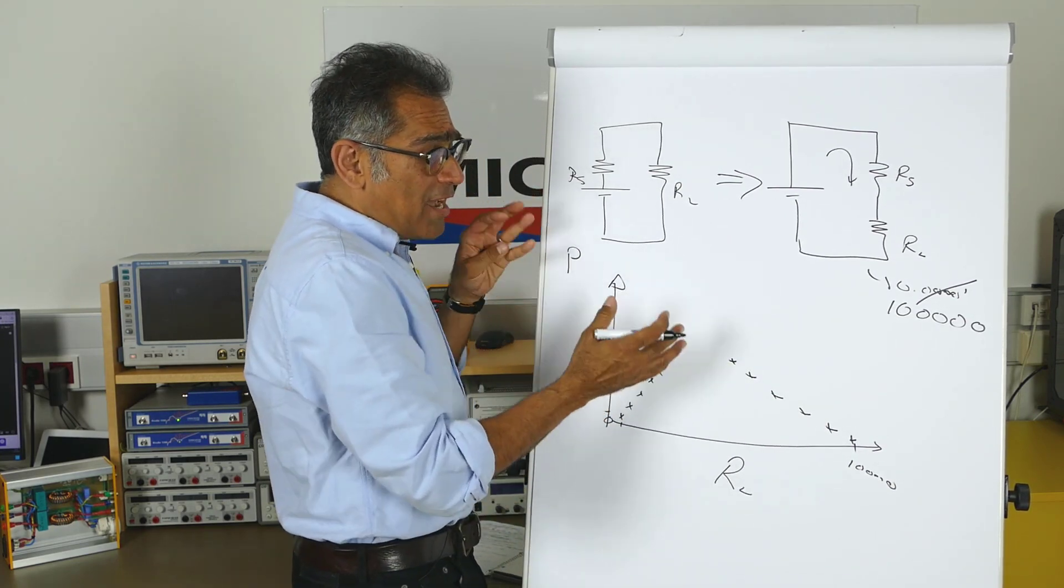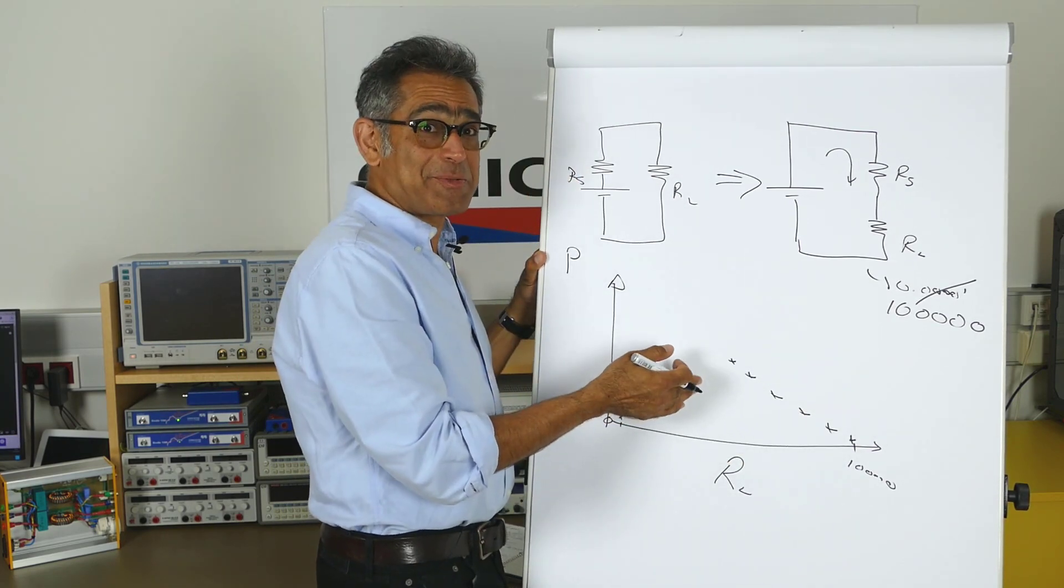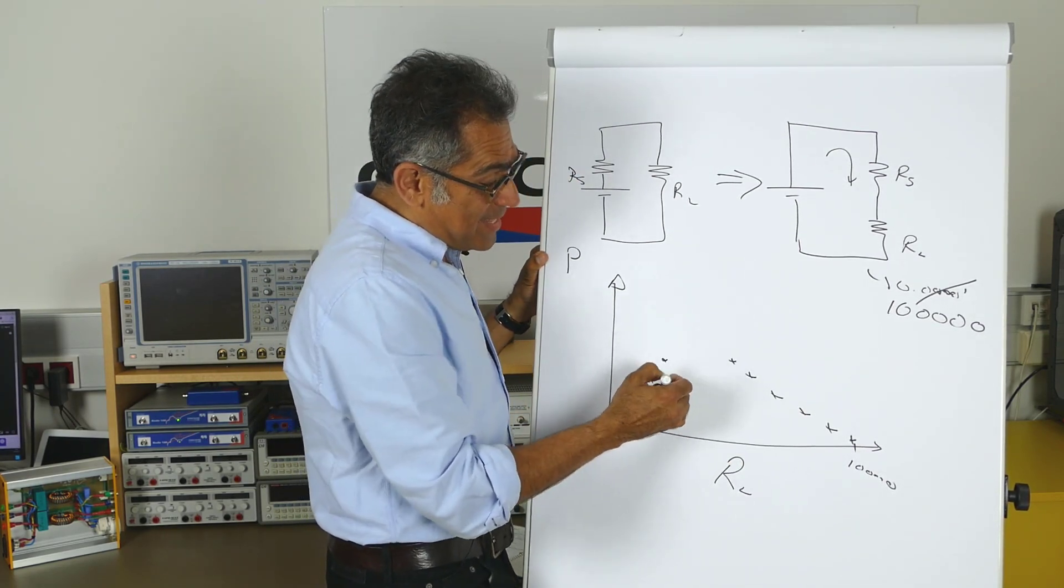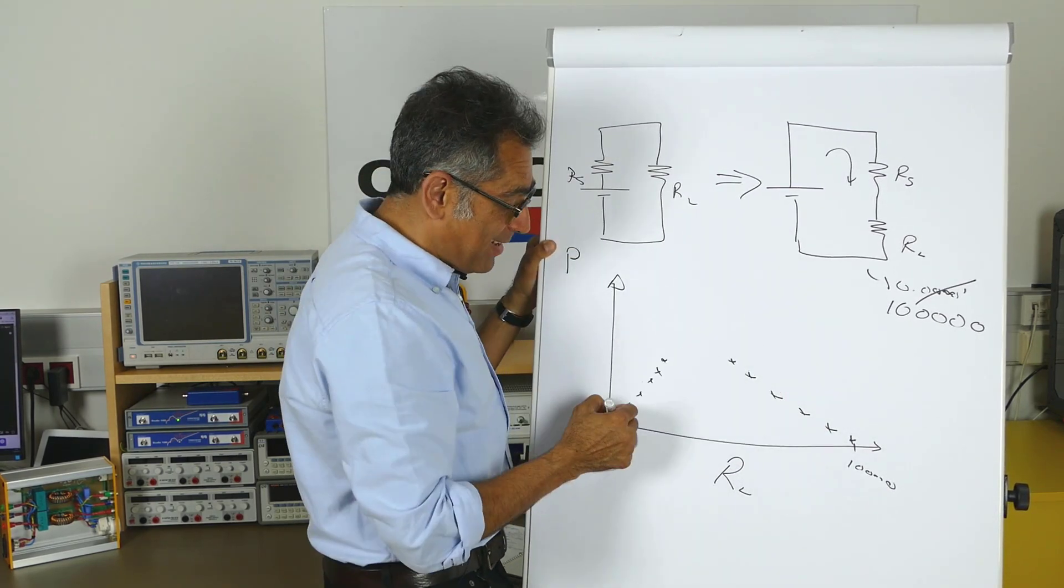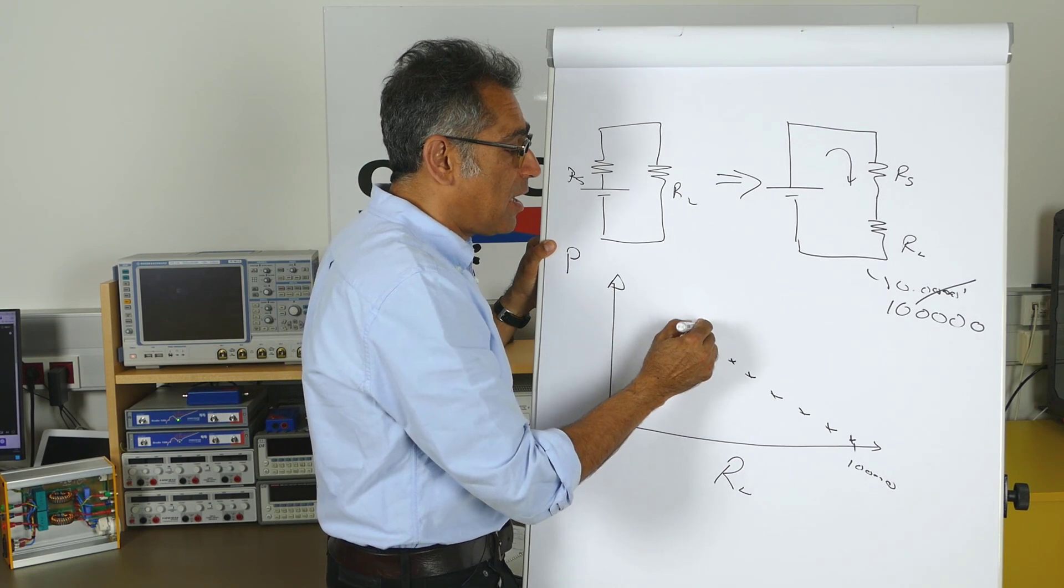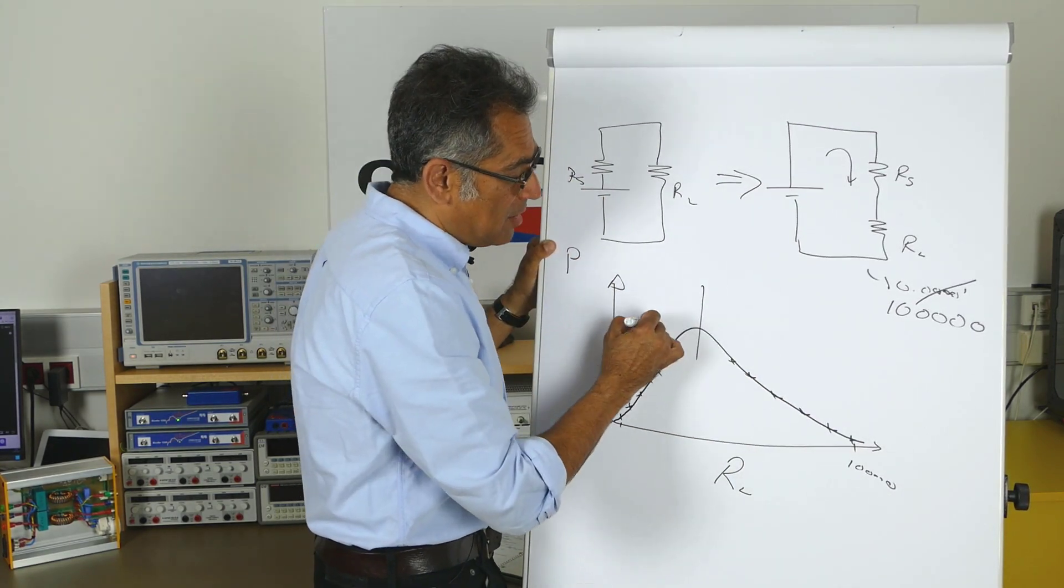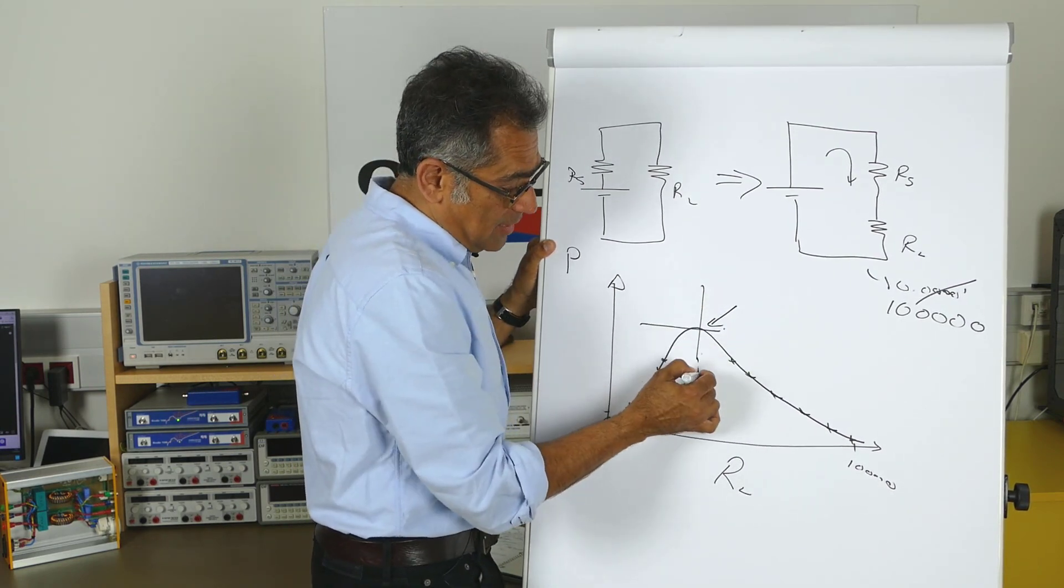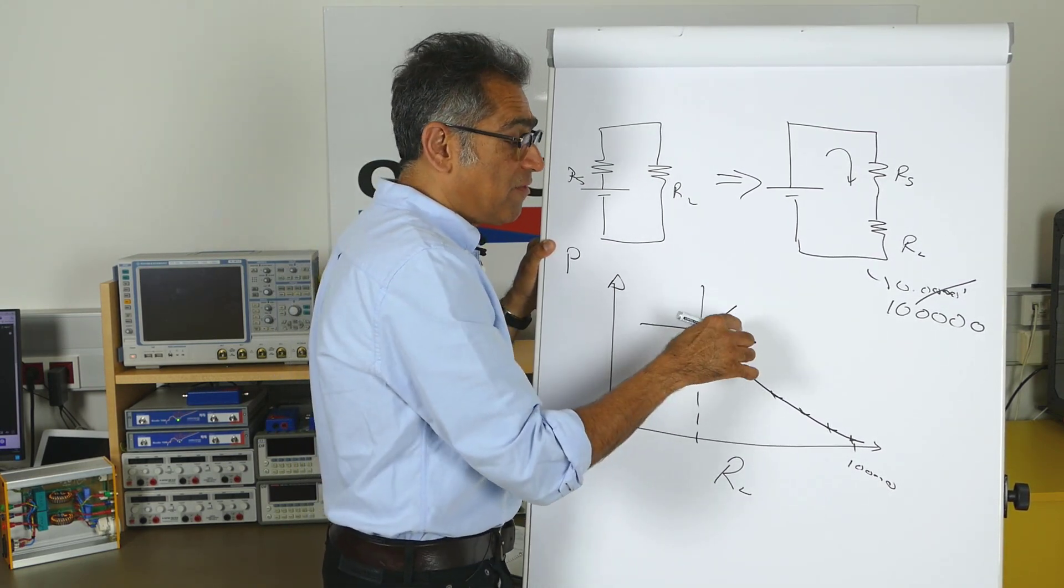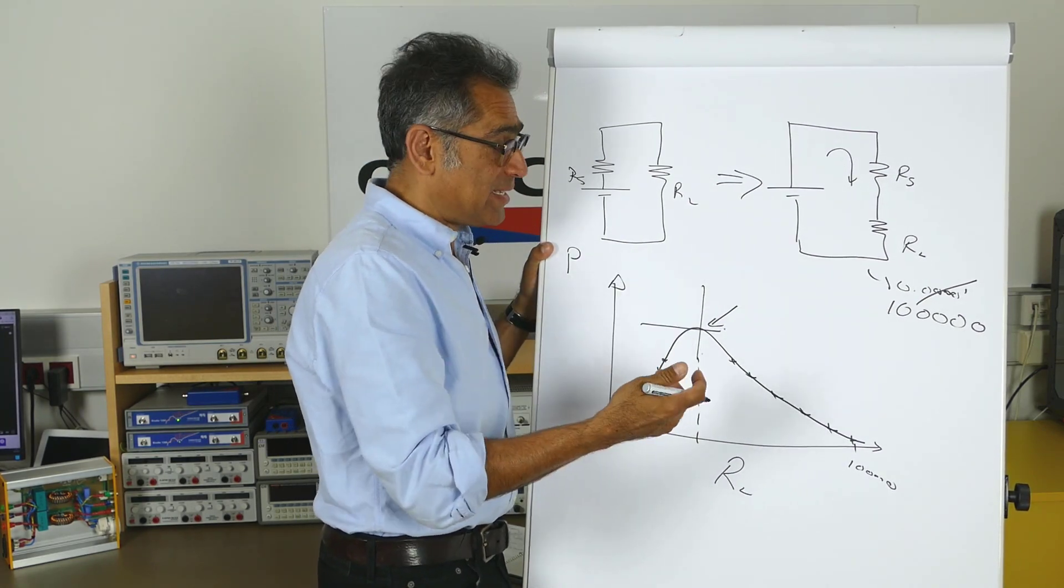Now you don't have to do a lot of mathematics to see that this curve is going to have a maxima. So if we extend these, at some point this is going to become a maximum and go back down, and it will look probably something like this. And this is our maxima of the curve, and at this point is the sweetest spot of RL whereby we deliver the maximum amount of power to it.